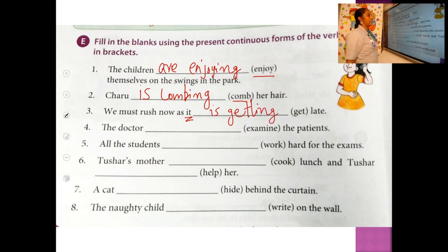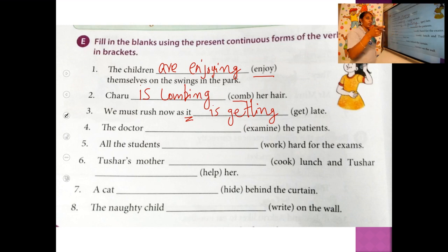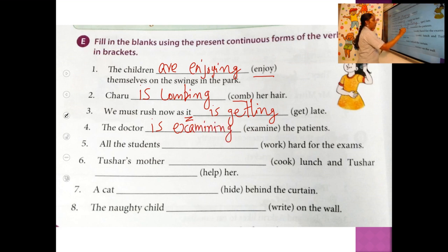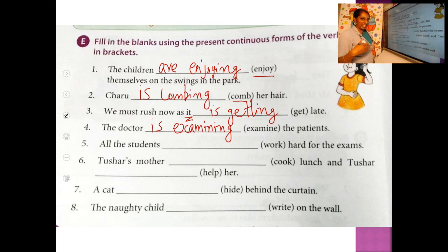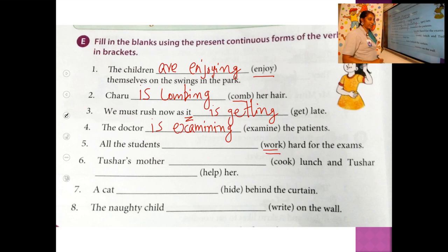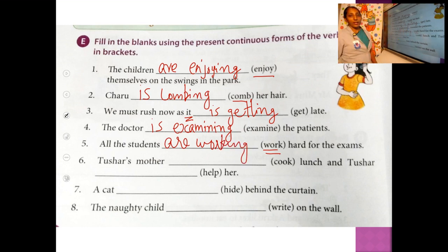Fourth sentence: 'The doctor dash the patient.' The verb is 'examine.' The doctor is singular, so: the doctor is examining the patient. Examining means checking. Fifth sentence: 'All the students dash hard for the exams.' The verb is 'work.' 'All the students' is plural, so you write 'are.' All the students are working hard for the exams.